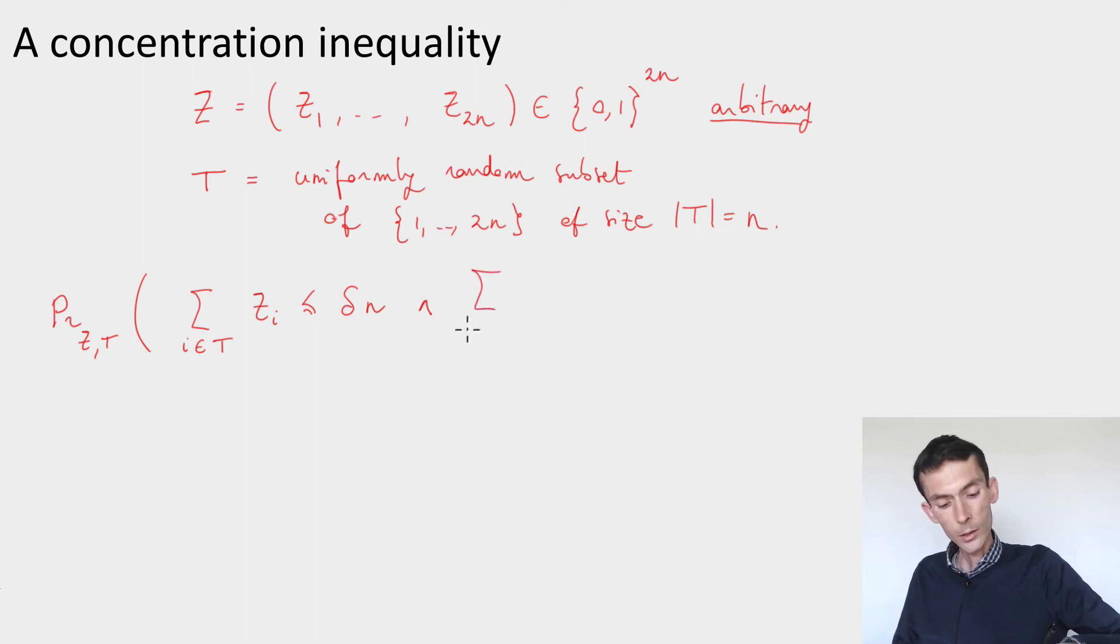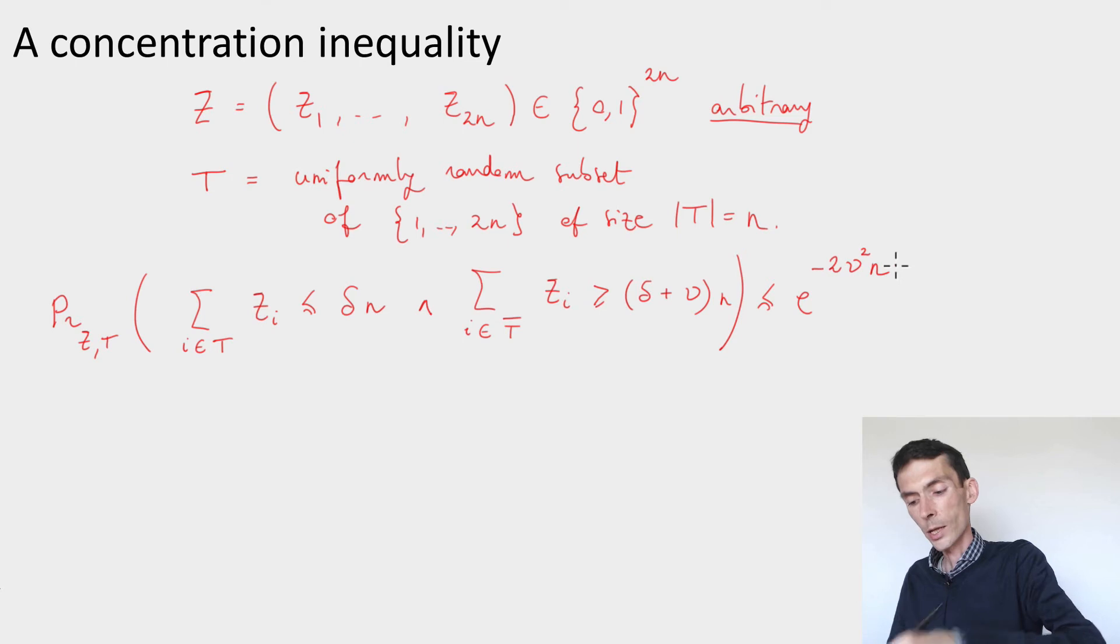And at the same time, when I sum over the indices that are not in t, I would observe something that is bigger than delta plus a little bit more, some nu times n. The inequality says that this probability is always going to be at most exponentially small in nu squared times n. So this is why the inequality is very strong.